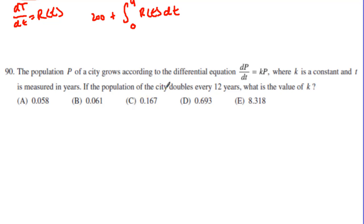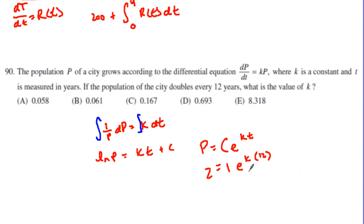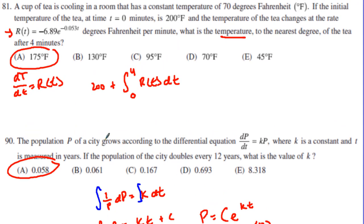We're doing the same approach with differential equations for population growth. Separating variables: (1/P) dP = k dt, primed and ready to integrate, giving P = Ce^(kt). The population of the city — Dublin — doubles from 1 to 2 in exactly 12 years. Solving for k: natural log of 2 is 0.693 divided by 12, so k ≈ 0.058. Use your calculator for that one.